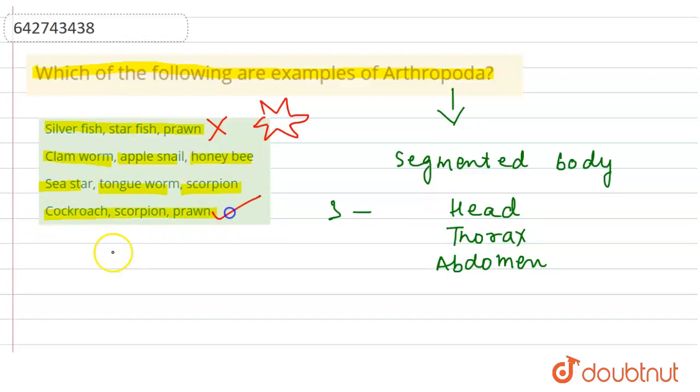We could find the structure with head, thorax, and the presence of the abdomen. From the thorax and abdomen, we could see the legs or appendages coming out. So option four is correct.